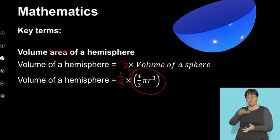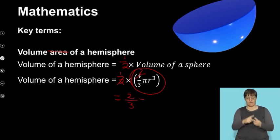So it's going to be a half times the volume of a sphere, and I know that the volume of a sphere is 4/3 πr³. So if I want to simplify this, I can cross-cancel my twos. So the volume of a hemisphere will be 2/3 πr³.